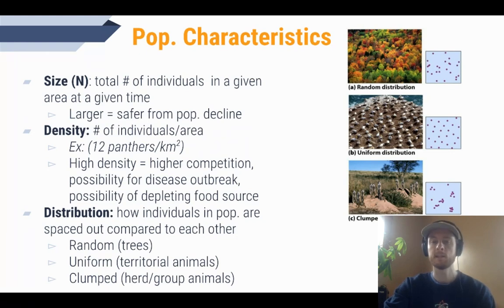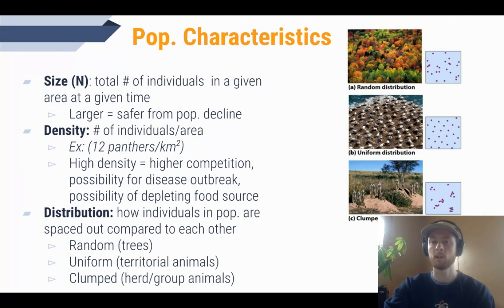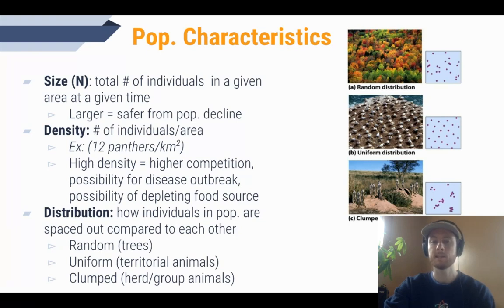Density is the number of individuals per unit of area. For example, we could have 12 panthers per square mile or per square kilometer. Generally the more dense a population becomes, the stiffer the competition for resources and the more likely a disease outbreak is, since diseases move more easily between individuals in a denser population.